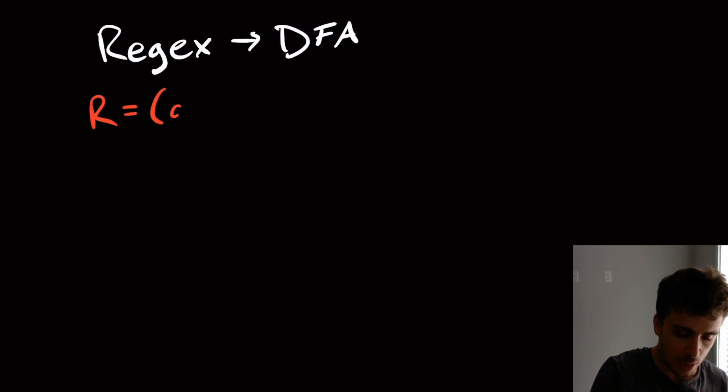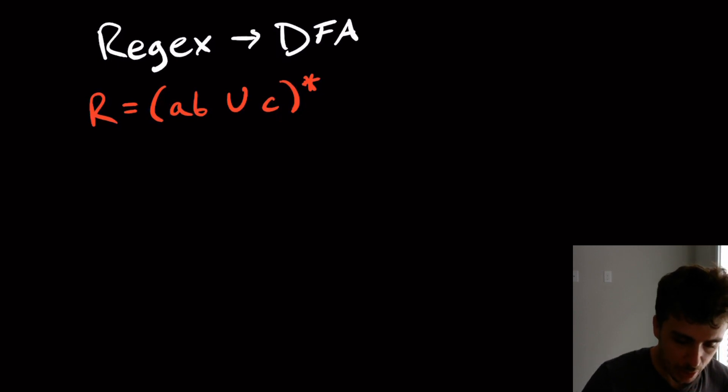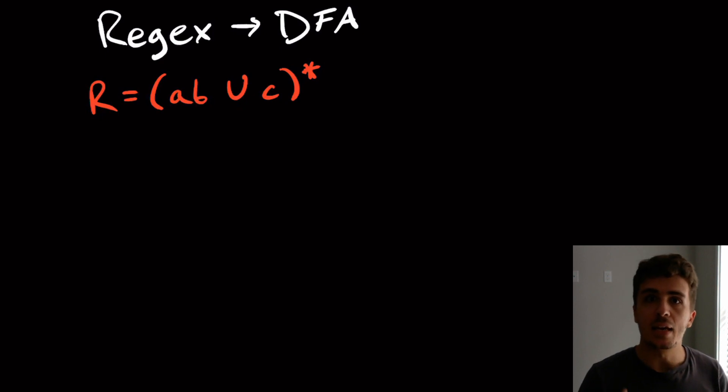Let's do the regex AB union C star. This is an example I use in my classes all the time. What you do is take partial derivatives of this regex, and each of those derivatives is going to correspond to a single state. You start off with the initial state, which is taking the derivative with respect to epsilon. That's the start state. From there, you take partial derivatives, you get more regexes which form more states. Each state is corresponding to a possible regex corresponding to the derivative.